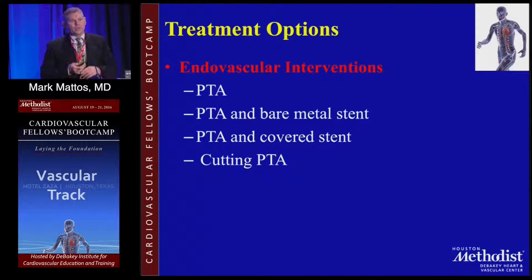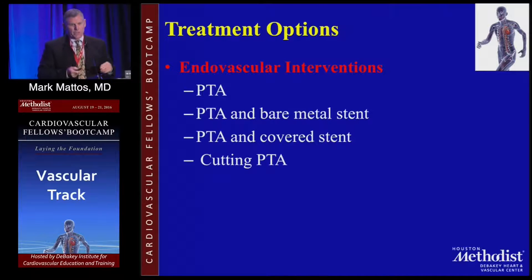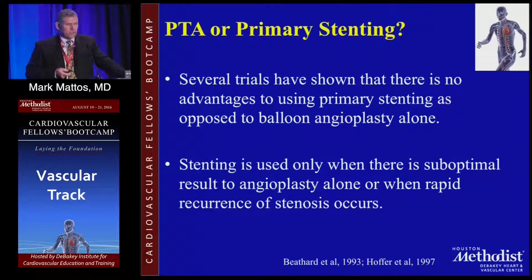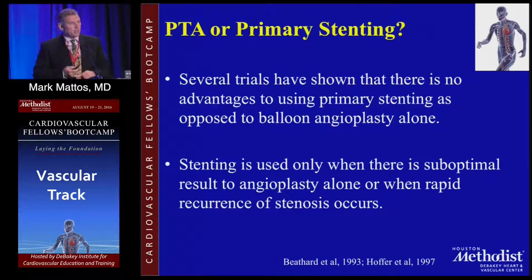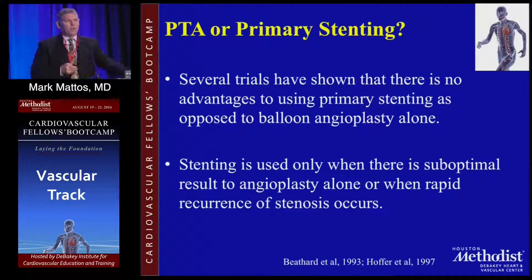The majority of stenoses occur at the venous end. Treatment options are similar to arterial PTA: plain PTA, PTA with bare metal stent, PTA with covered stent, or using a cutting balloon for hard-to-treat stenosis, or using a buddy wire as a cutting-balloon-type procedure. There is no advantage to primary stenting of outflow stenosis with bare metal stents. Your job is to maintain the fistula — the minute you put a stent in, the clock runs even faster than after balloon angioplasty.